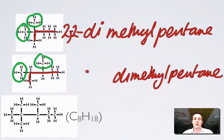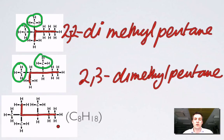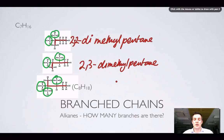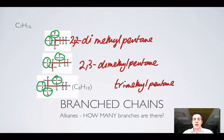The difference in this molecule is that the two methyl branches aren't both on the second carbon — one is on the second and one on the third, giving 2,3-dimethylpentane. Using numbers like 3,4 would be a mistake since you must always use the lowest combination possible. Finally, a C8H18 molecule with the longest chain of five has three methyl branches — trimethylpentane — located at positions 2, 2, and 3: so 2,2,3-trimethylpentane.